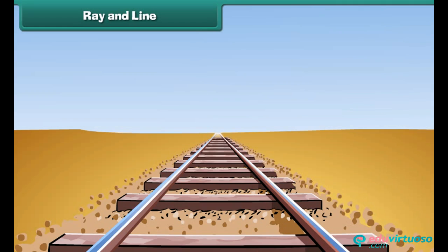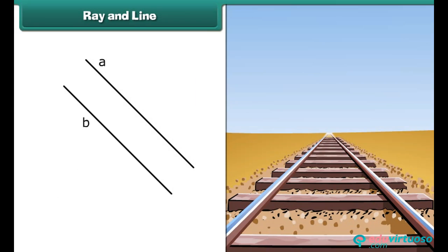Now notice this railway track. The two sides of track do not cross one another. These sides are parallel. Similarly, two lines are said to be parallel lines if no matter how far the lines extend in either direction, they never cross each another.